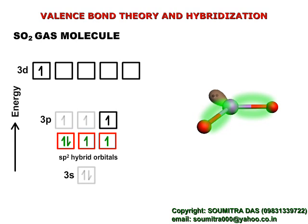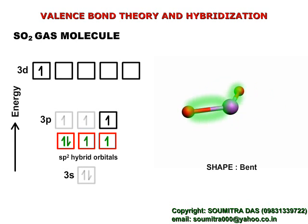Here the lone pair as usual does not contribute to the shape of the molecule, and the shape is bent with bond angle 119 degrees, which is very close to sp² hybrid orbital angle.